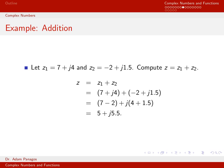Now that we've talked about different complex number operations in a general sense, let's go ahead and work some specific examples with actual numbers. In this example of addition, we're going to work with the complex number z1, which is equal to 7 plus j4, and the complex number z2, which is equal to negative 2 plus j times 1.5, and we're going to compute the sum z equals z1 plus z2.